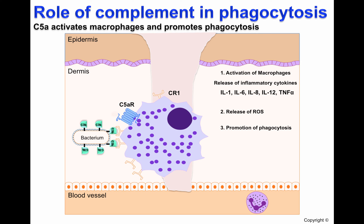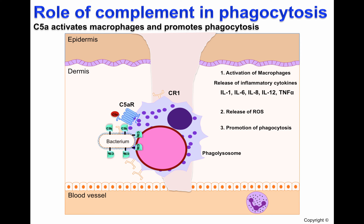As you can see, when C5a binds, it greatly enhances these actions and also allows for more efficient phagocytosis and destruction of the pathogen in the phagolysosome.